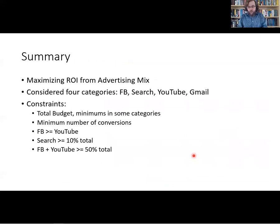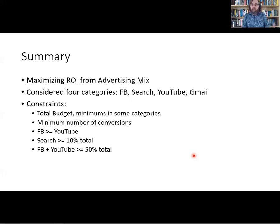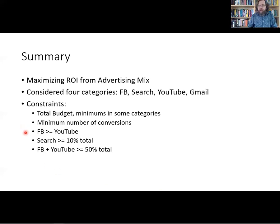To summarize, we looked at an advertising mix problem formulated as a linear program. If you didn't have enough data to maximize ROI, you could instead maximize clicks or number of sales — but we have the data to maximize ROI. We looked at four categories: Facebook, search, YouTube, and Gmail. Adding more categories is easy — just add more variables and more columns to the spreadsheet. Constraints included a total budget, minimum amounts per category, and ratio or percentage constraints: Facebook ≥ YouTube, search ≥ 10% of total, and Facebook + YouTube ≥ 50% of total.